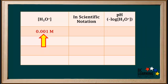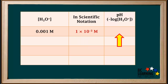Let's do a few examples. We have a solution in which the hydronium ion concentration is 0.001 molar. In scientific notation, that's 1 times 10 to the negative 3 molar. The log of 10 to the negative 3 is negative 3, so the pH, or negative log of 10 to the negative 3, is just positive 3.